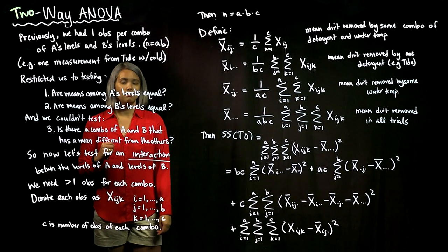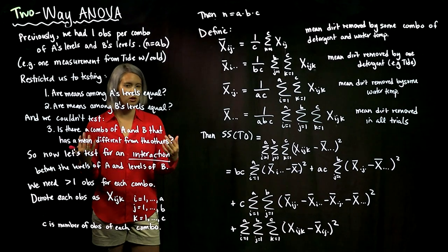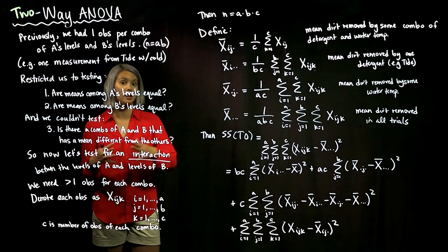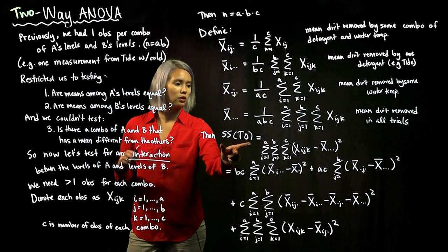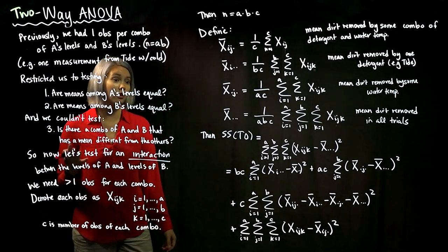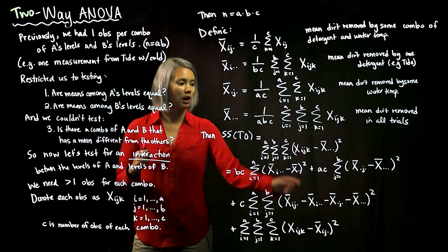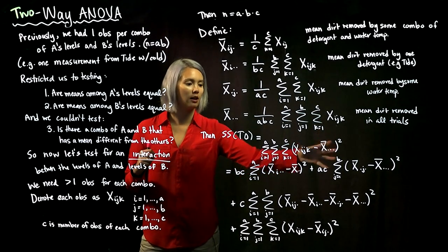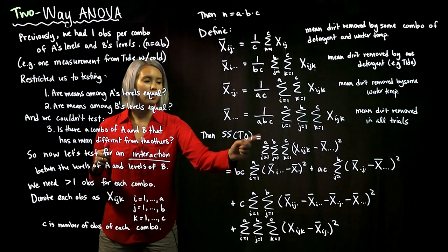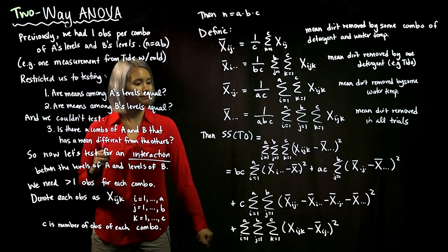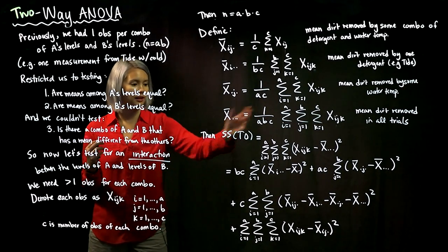Now we need to write down our total sum of squares, which follows exactly what we did for one-way and two-way ANOVA — just made more complicated. The total sum of squares is the variability between each observation and the grand mean: we take one observation minus the grand mean, square it, and sum over all data points — i from one to A, j from one to B, and k from one to C.